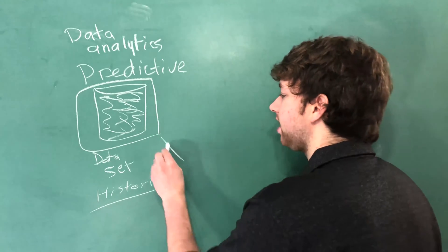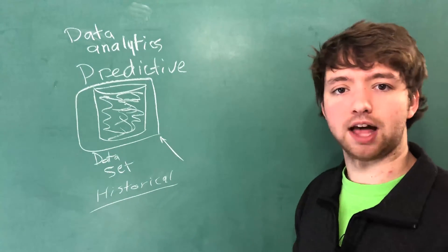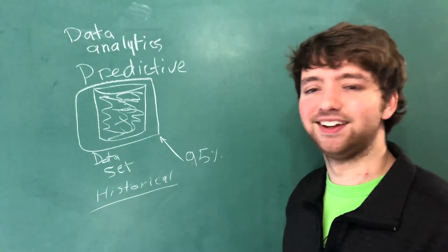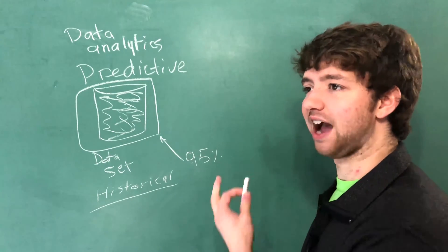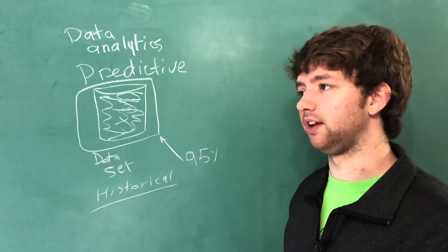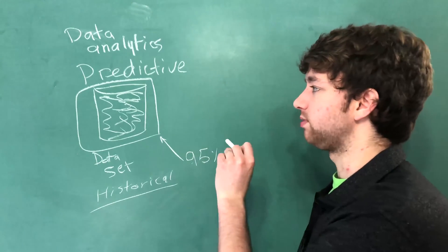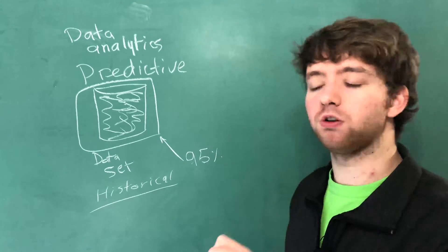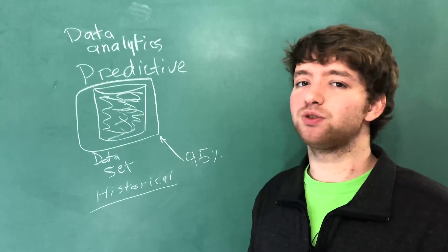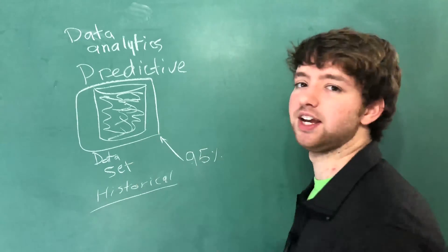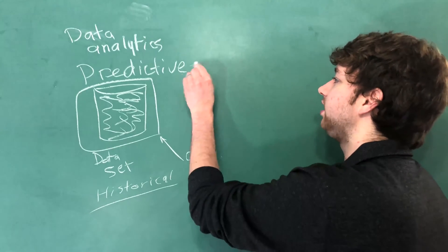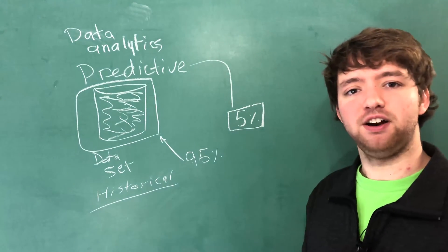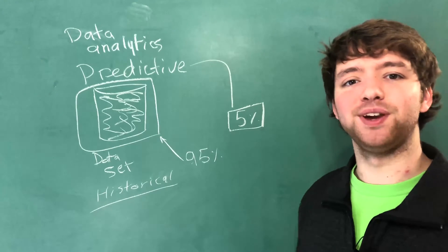When we have a data set and it does not represent reality entirely, let's just say this represents reality like 95%, and I know it's weird quantifying how much something represents reality but just trust me here. The reason it's like that is because we don't have data for every single possibility in the entire world. If we did, then we could represent reality completely in our data set. The predictive part of data analytics is the five percent. What is the five percent of non-represented reality going to do?